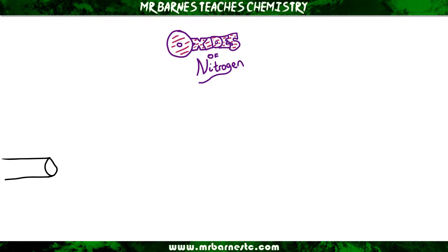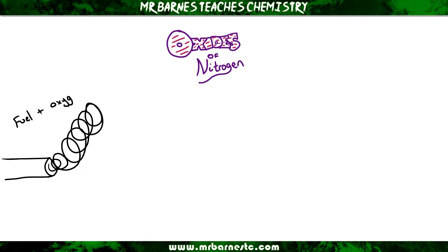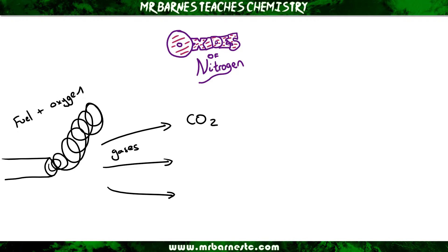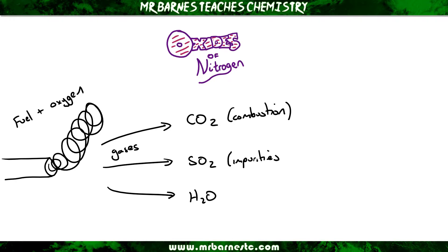When we look at combustion, if we take any fossil fuel and we react it with oxygen in air, we will get carbon dioxide, sulphur dioxide, and water produced. The carbon dioxide comes from combustion, the sulphur dioxide comes from sulphur impurities in your fossil fuels, and your water also comes from combustion.